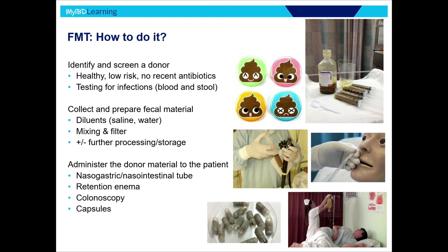To give you an idea of how we do FMT: you find and screen a donor — just like at the blood bank, someone healthy, clean living, low risk, no risk factors for dysbiosis-causing disease. You test them for infections in their blood and stool, collect the fecal material, mix it in saline, draw it up into syringes, and mostly give it colonoscopically — during a colonoscopy, while patients are sedated, we squirt the new bugs in. Other approaches include nasogastric or nasoduodenal tubes — most people really hate that — enemas, or capsule, which is starting to gain more traction and eliminates the need for a colonoscopy.